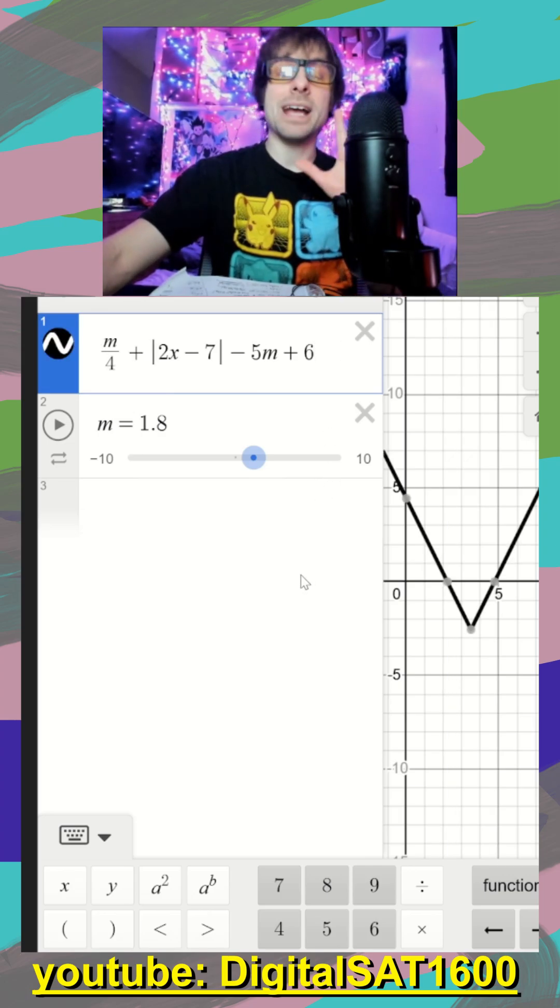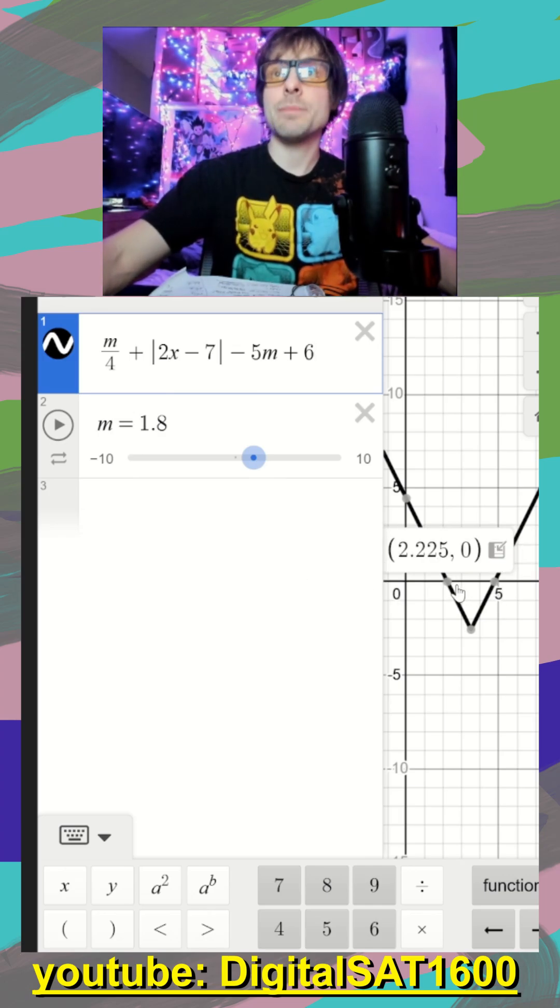And then now you get rid of your equal zero. You can see my graph is technically the same. My two solutions are actually the same. It's just I can see them now.